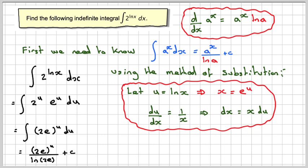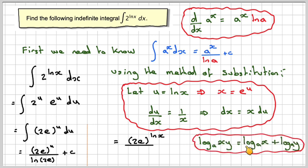Now replacing u, because u was ln x, we have 2e to the ln x. We use the laws of logarithms for the denominator. We've got ln xy equals ln x plus ln y, so we can write this as ln 2 plus ln e in the denominator, plus c.